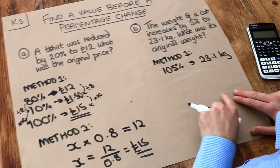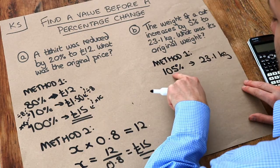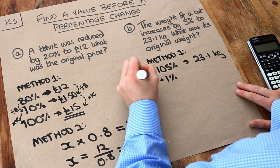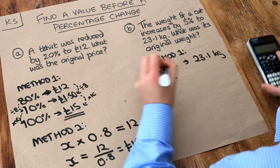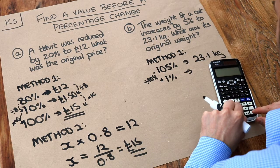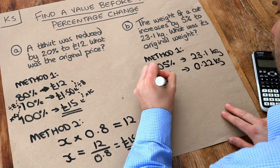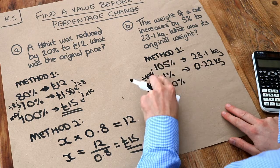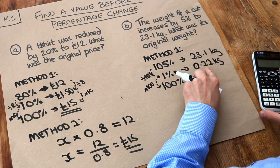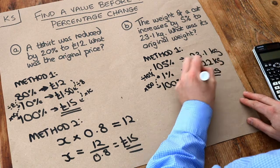So as before, we need to work our way back to 100%. Well, we could go to 10%, but it doesn't divide nicely to get to 10%. Let's just divide by 105 to get to 1%. So if we divide that by 105, let's divide this by 105. So 23.1 divided by 105 is 0.22 kilograms. And then to get to 100%, well, to get from 1 to 100, we need to multiply by 100. So let's multiply this by 100, 0.22, multiply by 100. And we get 22 kilograms. So that's the final answer.